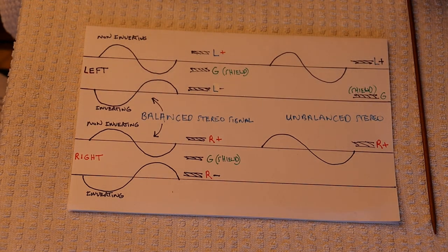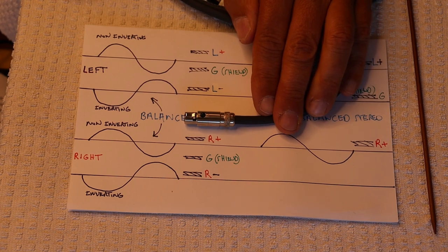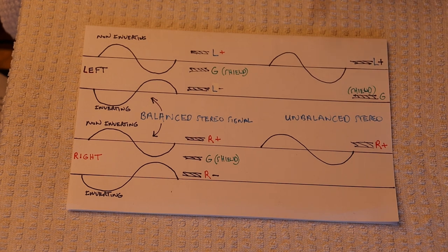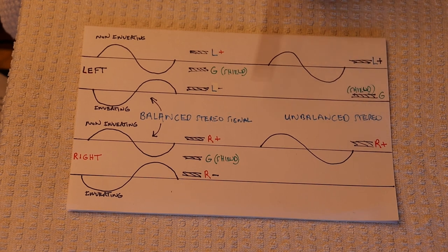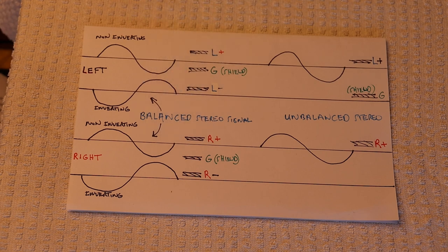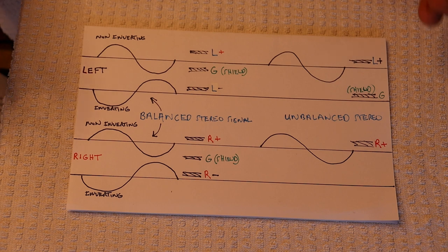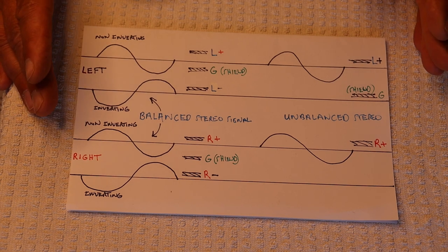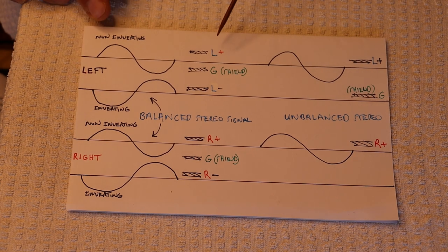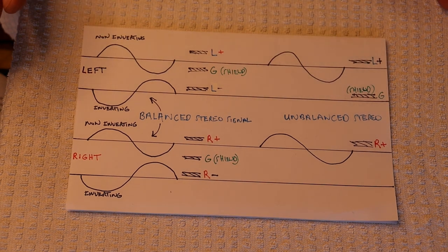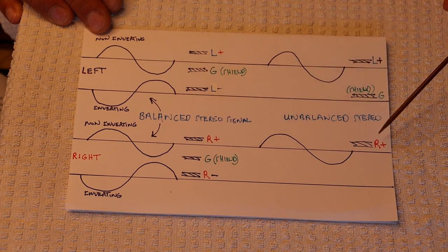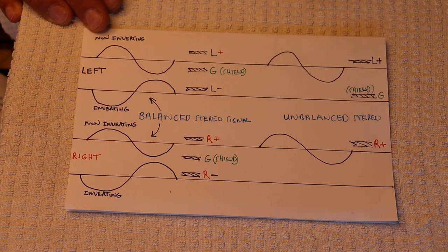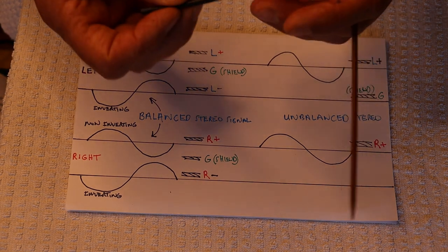So this here at this end is going to be, we have to choose is going to be, let's say a left positive and a right positive. So you might think, Jim, you've only got half the audio signal. Well, we've only got half the available audio signal, but we've got the full audio signal itself, the original signal. So you can't take a left positive and a right negative. They are going to cancel each other out, but you can take a left positive and a right positive, and you can combine the shield ground return path.